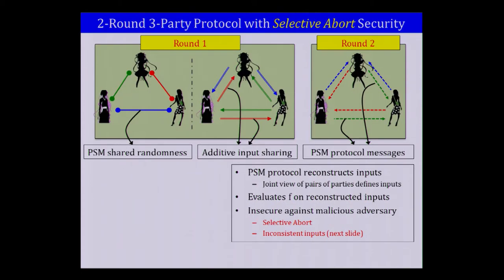The first protocol is the two-round three-party selective abort secure protocol. In the first round, parties set up shared randomness for the PSM by exchanging random pads, and in parallel additively secret share their inputs. In the second round, they send PSM messages to evaluate the function. The PSM first reconstructs the inputs from the additive shares — possible because the joint views define all inputs — then evaluates the function, and everybody gets their output.